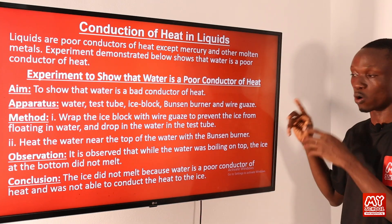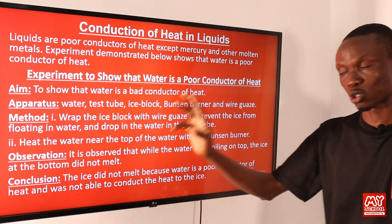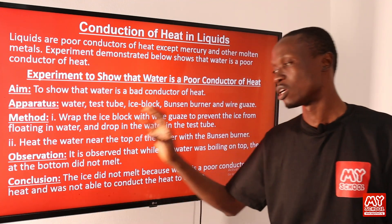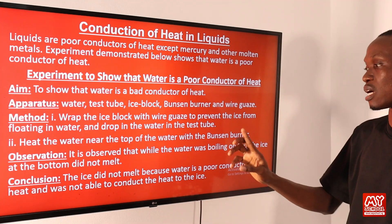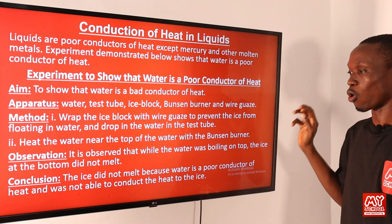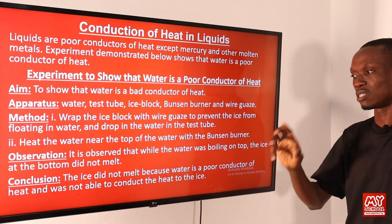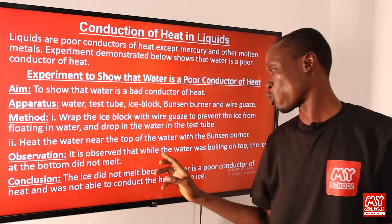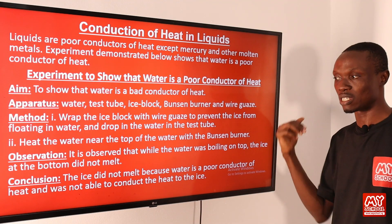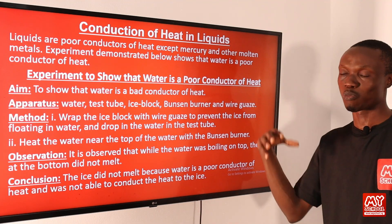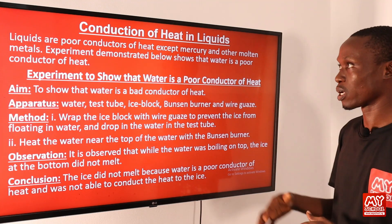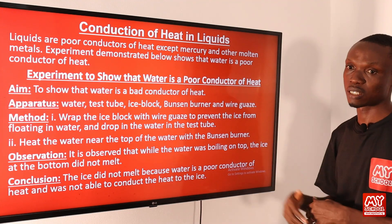Observation: while the water was boiling at the top, the ice at the bottom did not melt. Conclusion: the ice did not melt because water is a poor conductor of heat and was not able to conduct the heat down to the ice. For that reason, the ice at the bottom of the test tube did not melt.